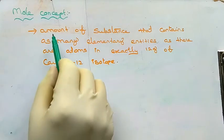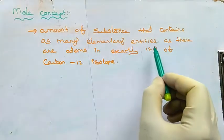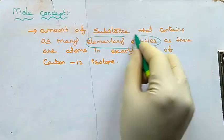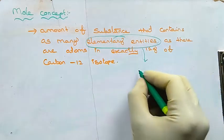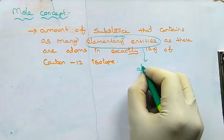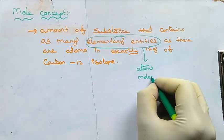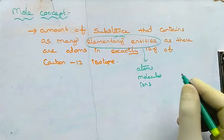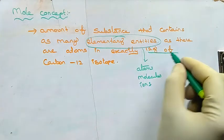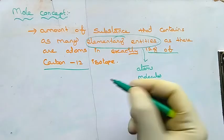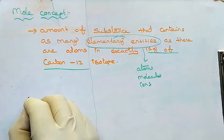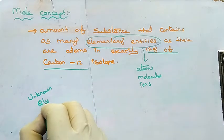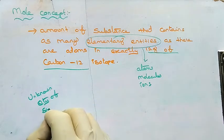Next we are going to see about the mole concept. A mole is the amount of substance that contains as many elementary entities as there are atoms in exactly 12 grams of the carbon-12 isotope. These elementary entities may be atoms, molecules, or ions.